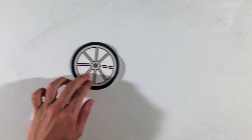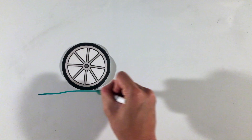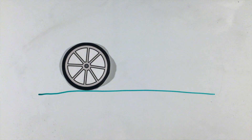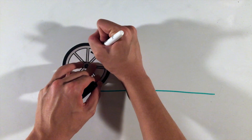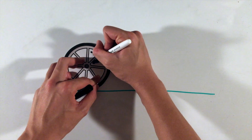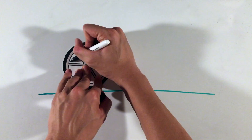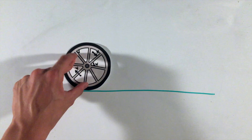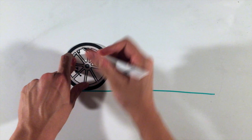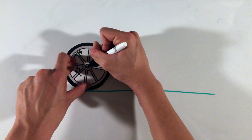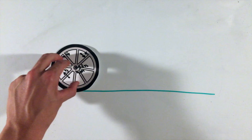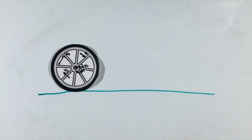The center of mass in many ways represents the core of the motion of an object or system of objects. One revision to Newton's first law is that for objects experiencing zero net force, the center of mass will not accelerate. This does not mean that the rest of the object must not accelerate.